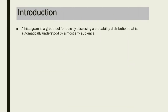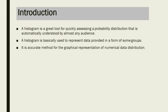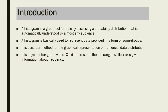A histogram is a great tool for quickly assessing the probability distribution, automatically understood by almost any audience. A histogram is basically used to represent data provided in the form of some groups. It is an accurate method for the graphical representation of numerical data distribution. It is a type of bar graph where the x-axis represents the bin ranges while the y-axis gives information about frequency.